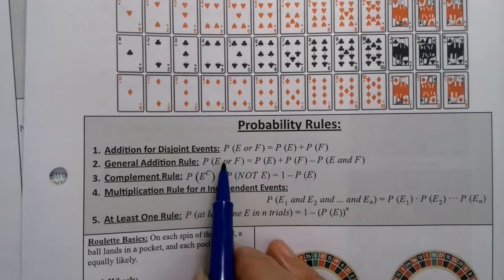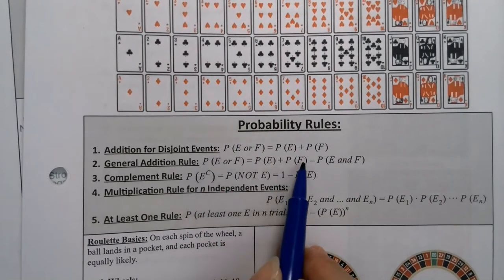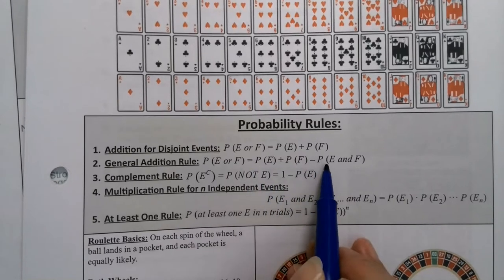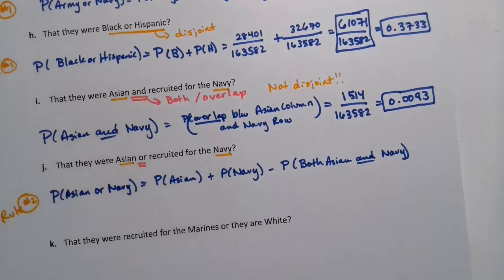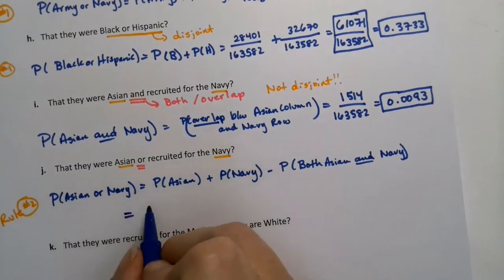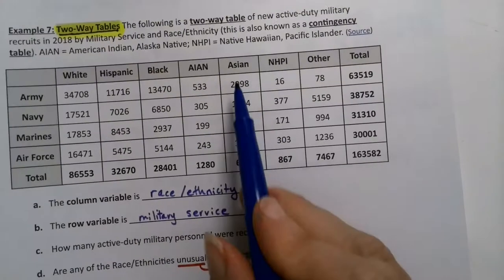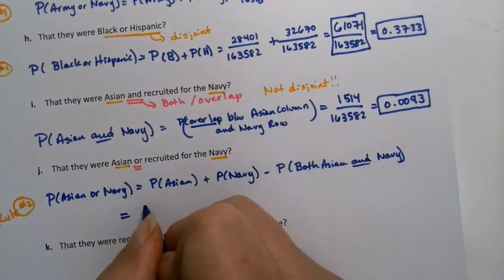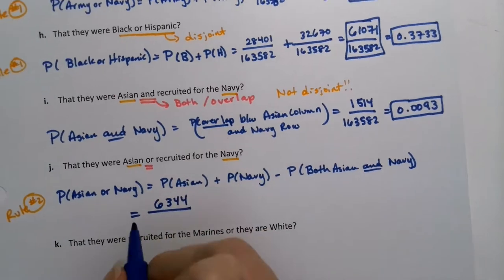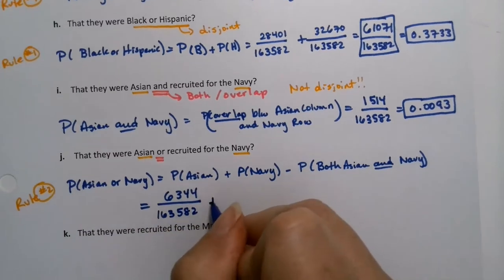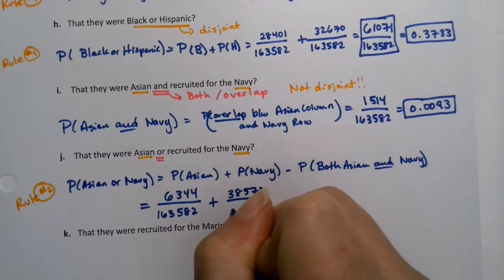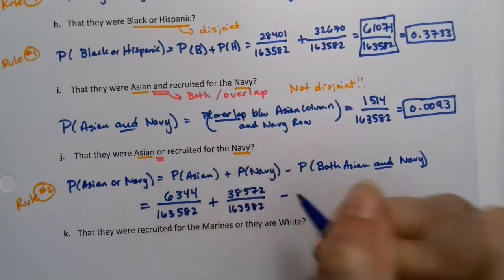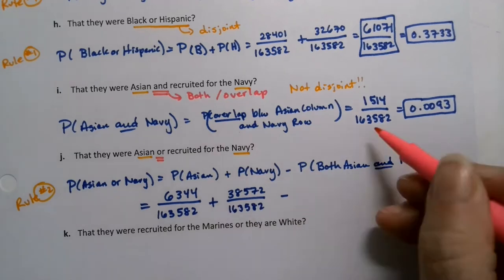All right. Well, let's see here. Asian - so if I look at the total right here, Asian was 6,344. So 6,344 Asian recruits to the military in 2018. And again, this is real data, or these are real data, I should say. And then Navy, there were 38,572 recruits into the Navy minus - but we just saw the overlap. That overlap is right here, right?